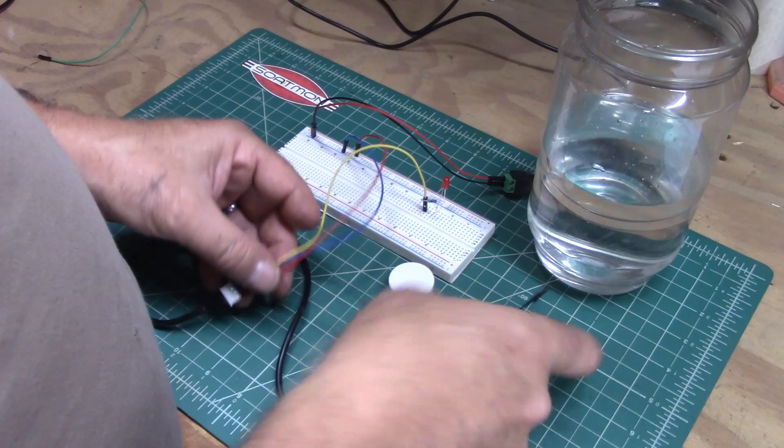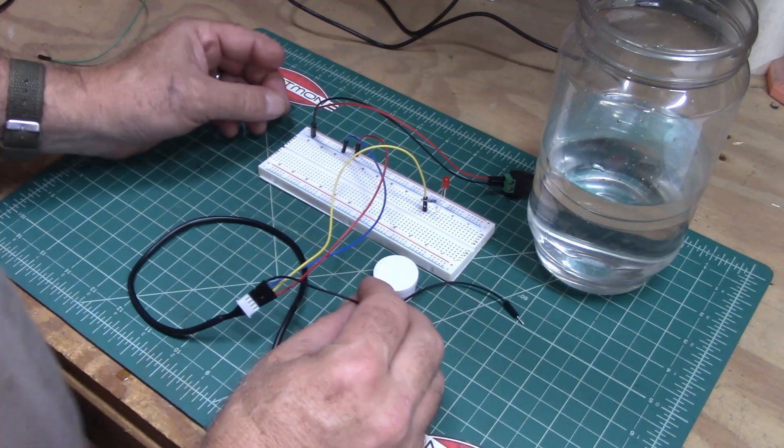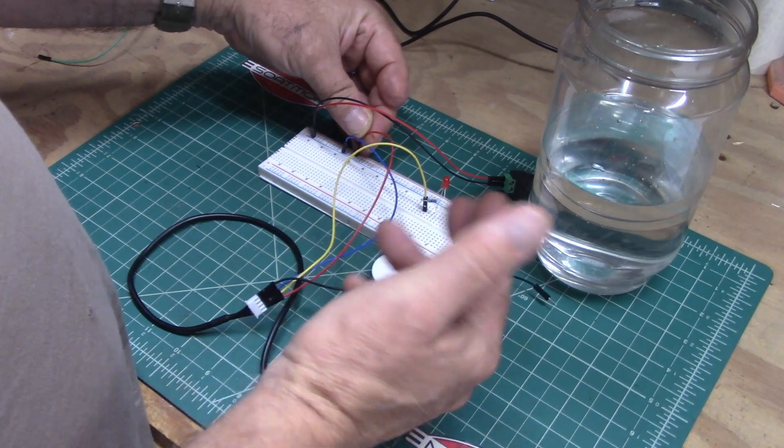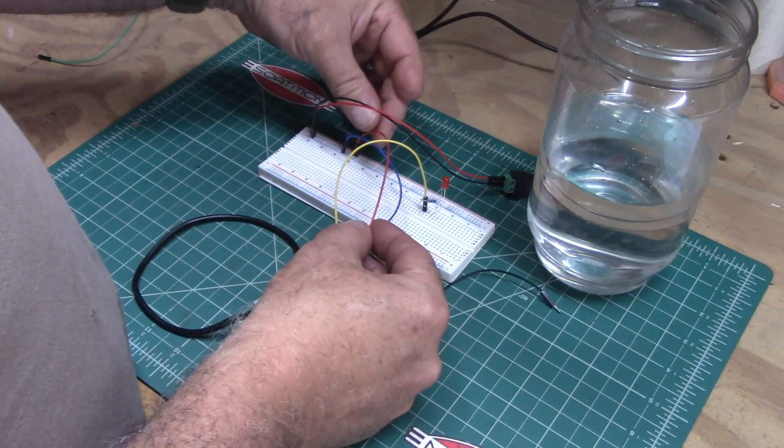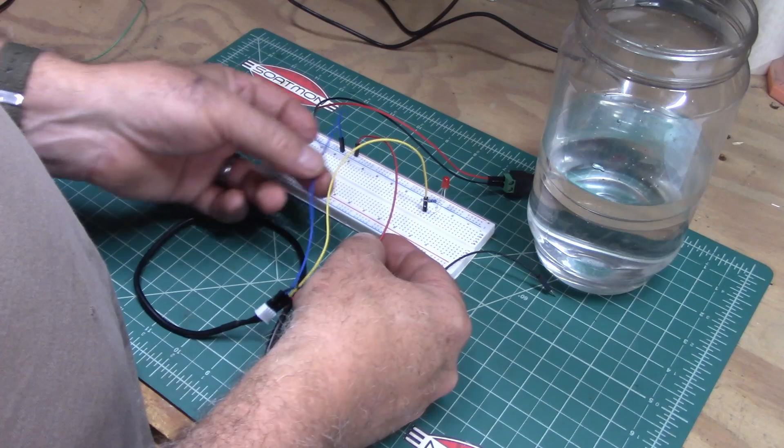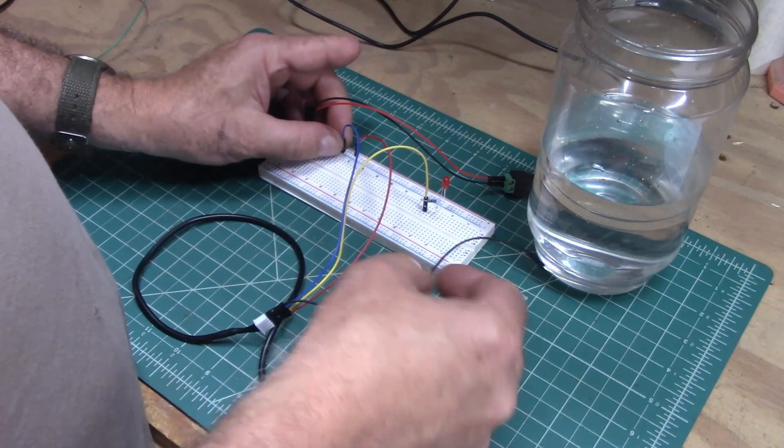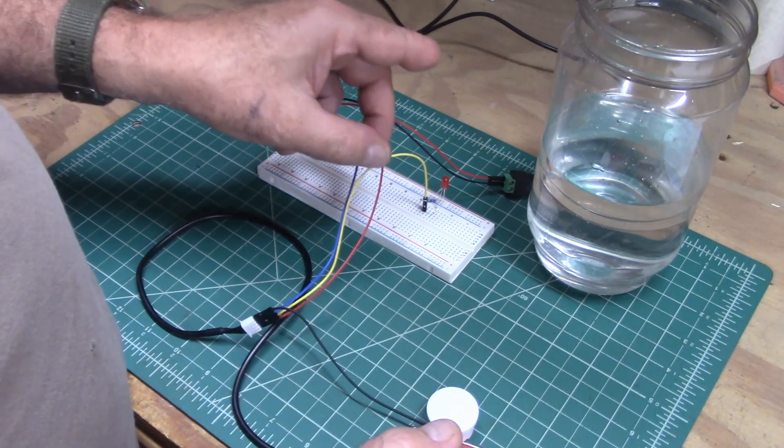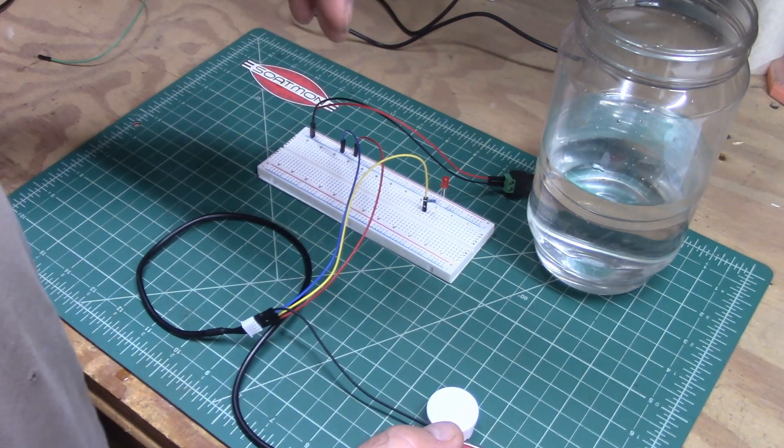So in order to hook this up, your red wire goes to the positive side. In this case I'm using 12 volts so I've got it to 12 volts positive. The blue one goes to 12 volts negative, and then the yellow goes to your output.